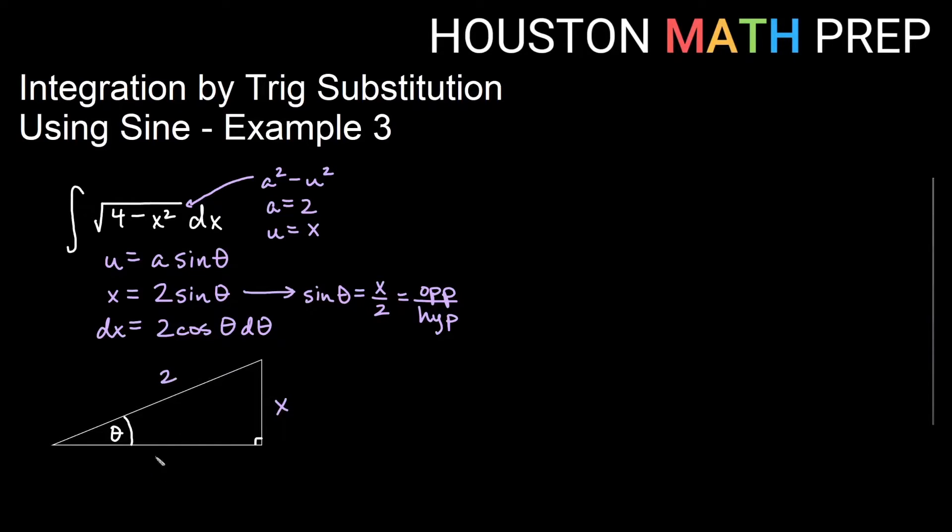And if I use Pythagorean theorem, this squared plus this squared would equal that squared, then I would get the square root of 4 minus x squared for this one.